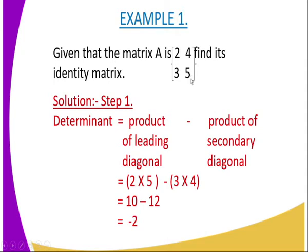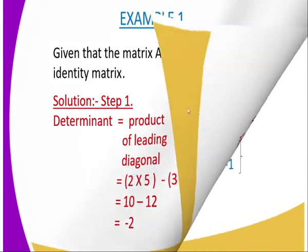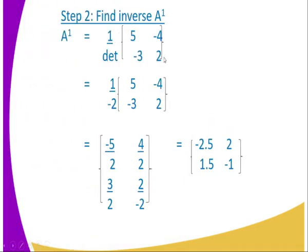In this rearranged matrix, the position of 2 in A is interchanged with the position of 5 — so 5 occupies the position of 2 and 2 occupies the position of 5. You also change the signs of the elements in the secondary diagonal. After that, you multiply this matrix by the scalar one over the determinant.